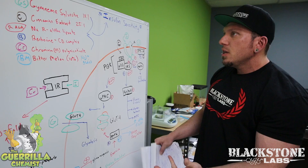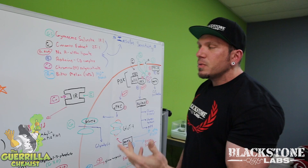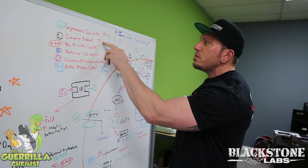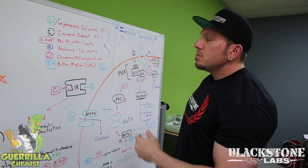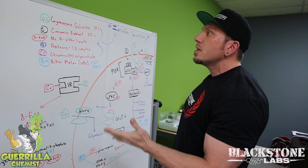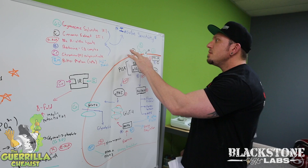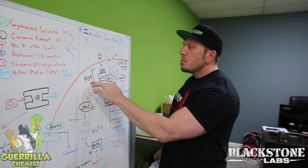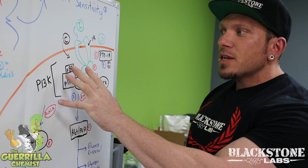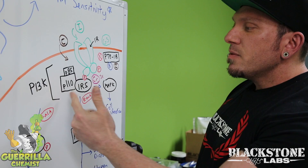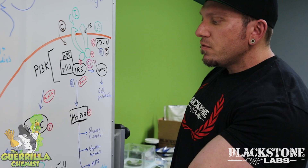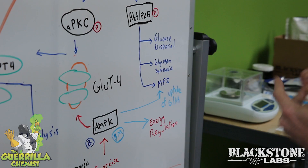We used a cinnamon extract — a very potent 25-to-1 polyphenol content. Most cinnamon supplements are about 4-to-1, maybe 10-to-1 if you have a good one. Cinnamon has bioactive polyphenols that help with the insulin process. Cinnamon can actually activate the PI3K part of the cascade without insulin actually working — it can mimic insulin without any carbohydrates present. By activating this pathway, it facilitates GLUT4 translocation as well as glycogen synthesis and muscle protein synthesis.